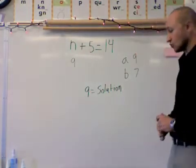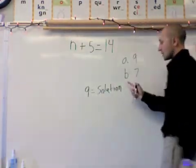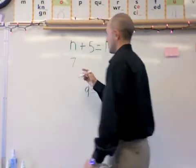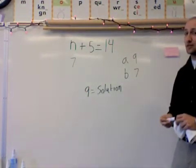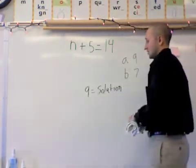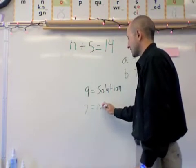Now they gave us the option of two answers, so let's try it with the other one. Option B was 7. If I use mental math again, 7 plus 5, guess what? Does not equal 14. That would mean 7 is not a solution.